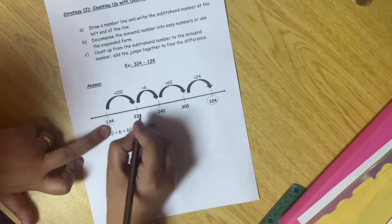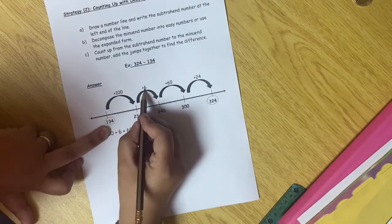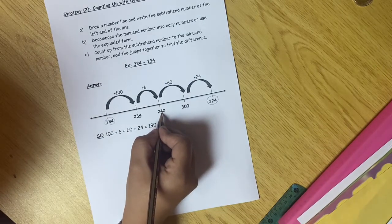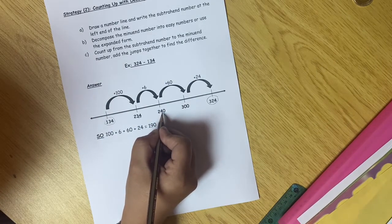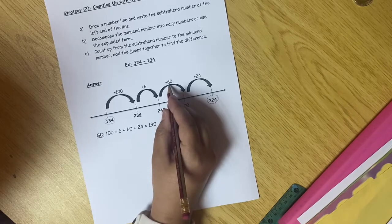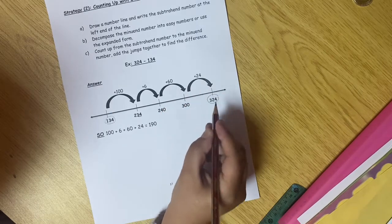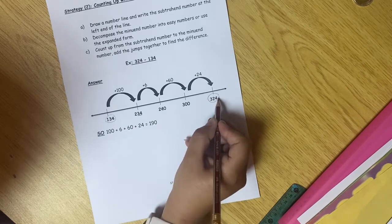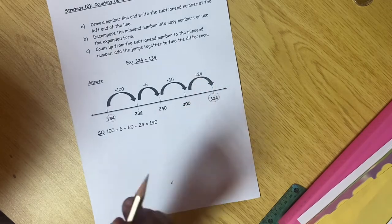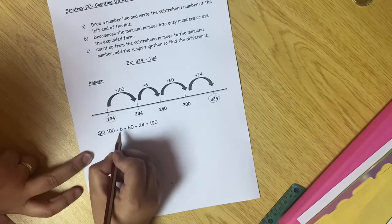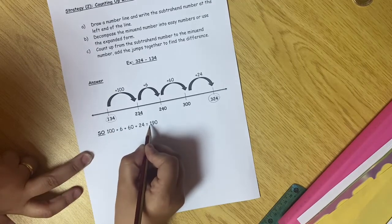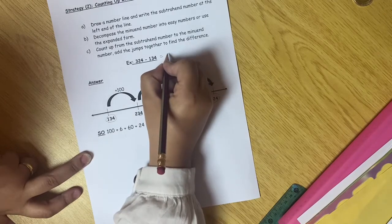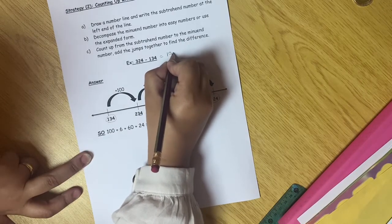Then, I will take this and reach to perfect 10, so I will do plus 6, so I get 240. Then, this 4, I want to make it perfect 10 again, so I will do plus 60, so I get 300. And at the end, what's left to reach 340 is the 24, so I will do plus 24. So here, 100 plus 6 plus 60 plus 24 equals 100, which is the difference between 324 and 134.